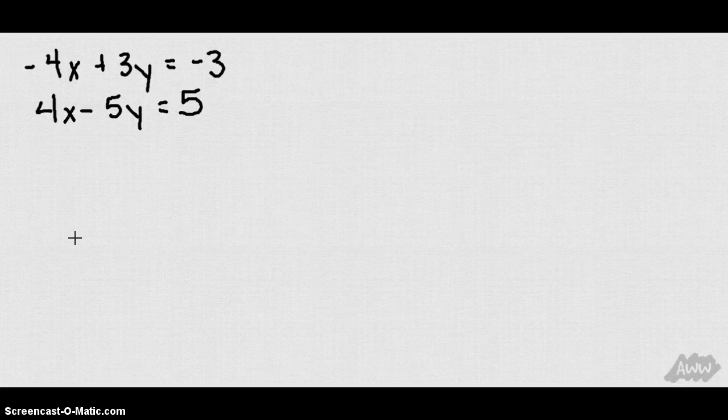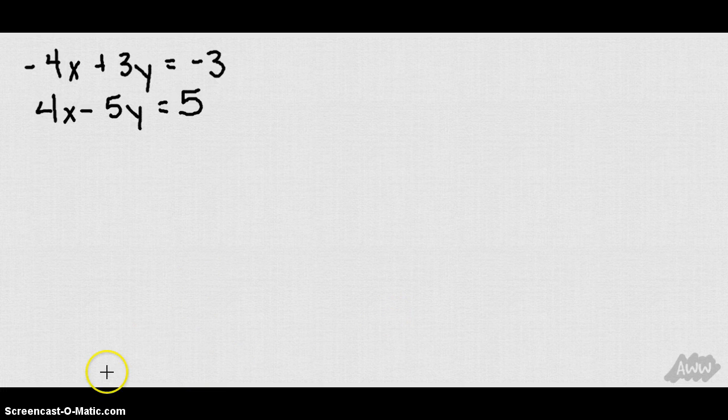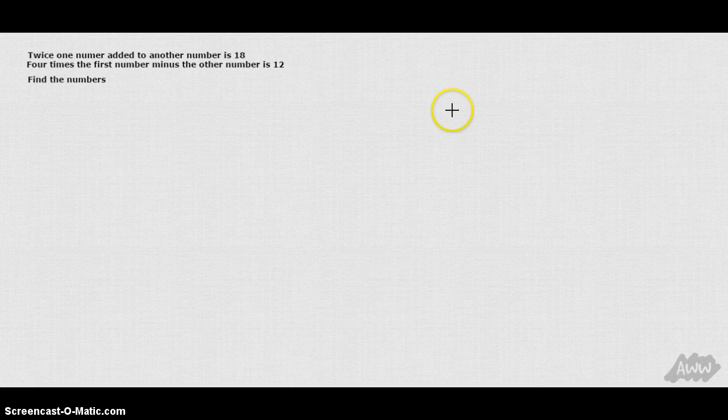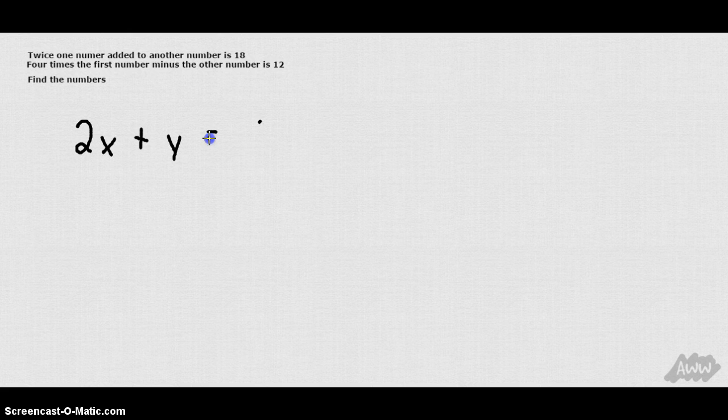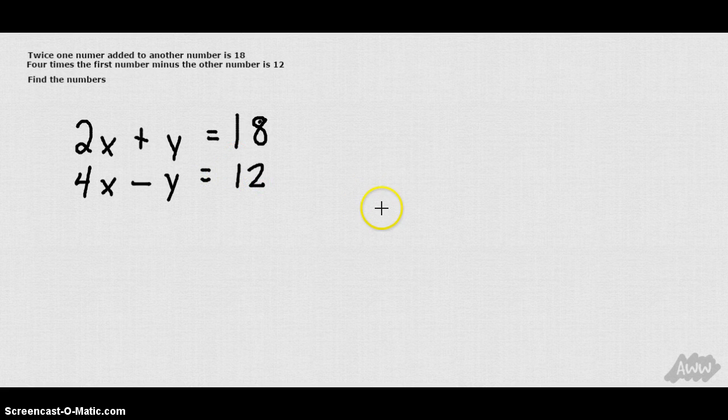So at this time, you can go ahead and pause the video and try this example in your notes. So let's go ahead and look at a word problem example. We have twice one number added to another number is 18. 4 times the first number minus the other number is 12. Find the numbers. So I'm going to write that as 2 times the first number x added to another number y is 18. 4 times the first number x minus the other number y is 12. And then we're just going to use what we did in the previous example to eliminate one of the variables and get our solution.